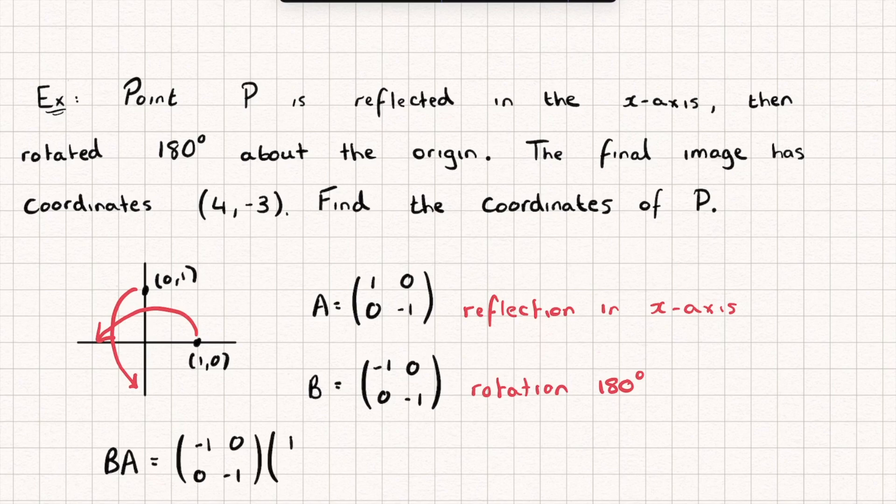negative 1 and multiply it by A like so and we get a new matrix which is going to be negative 1, 0, 0 and 1 like so. So this is the combined transformation matrix.